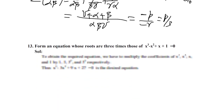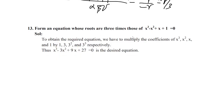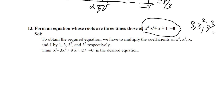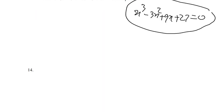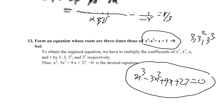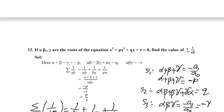Practice: form the equation whose roots are three times those of the given equation. The concept is: if roots are multiplied by 3, substitute x/3 into the equation. So x becomes 3x, x² becomes 9x², x³ becomes 27x³, adjusting coefficients accordingly. Similarly for four times — substitute x/4 and adjust coefficients.